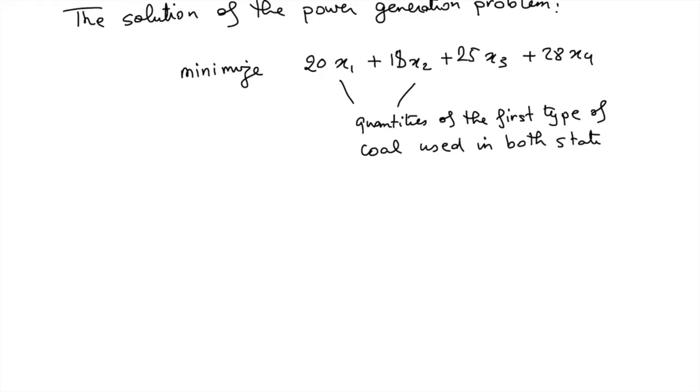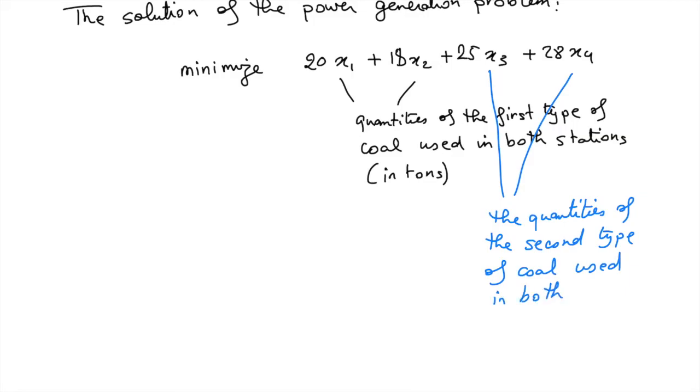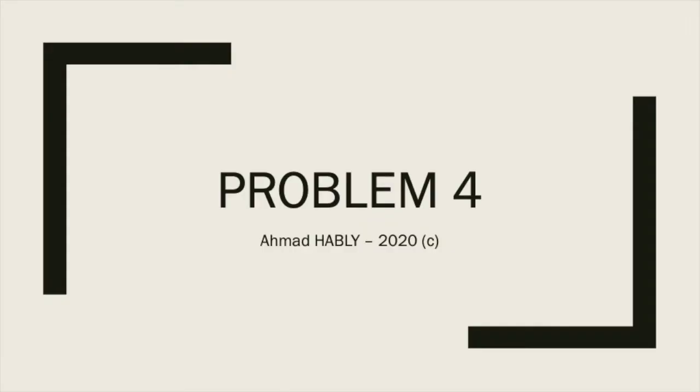X3 and X4 are the quantities of the second type of coal used in both stations in tons. The constraints are subject to these two equations: less than minus 40 and this one less than minus 80, where X is positive.